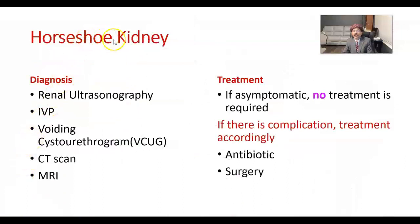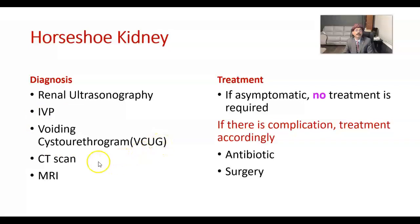Diagnosis of horseshoe kidney can be made by renal ultrasonography, intravenous pyelography, voiding cystourethrogram (VCUG), CT scan (computerized axial tomography), and MRI (magnetic resonance imaging).